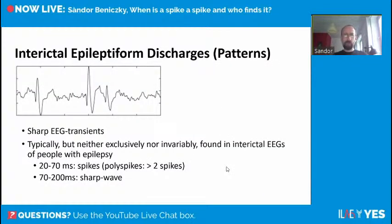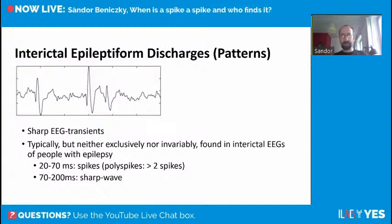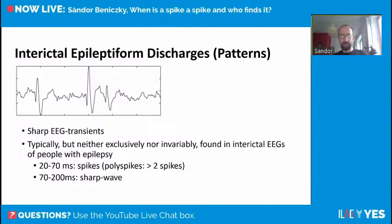For those of you who are totally naive about EEG, let me start by saying what an interictal epileptiform discharge or pattern is. These are sharp transients in the EEG signal, typically but neither exclusively nor invariably found in interictal EEG of people with epilepsy. If they are shorter — 20 to 70 milliseconds — we call them spikes. If they come several times after each other, they are poly-spikes. And if they are longer — 70 to 200 milliseconds — we call them sharp waves.